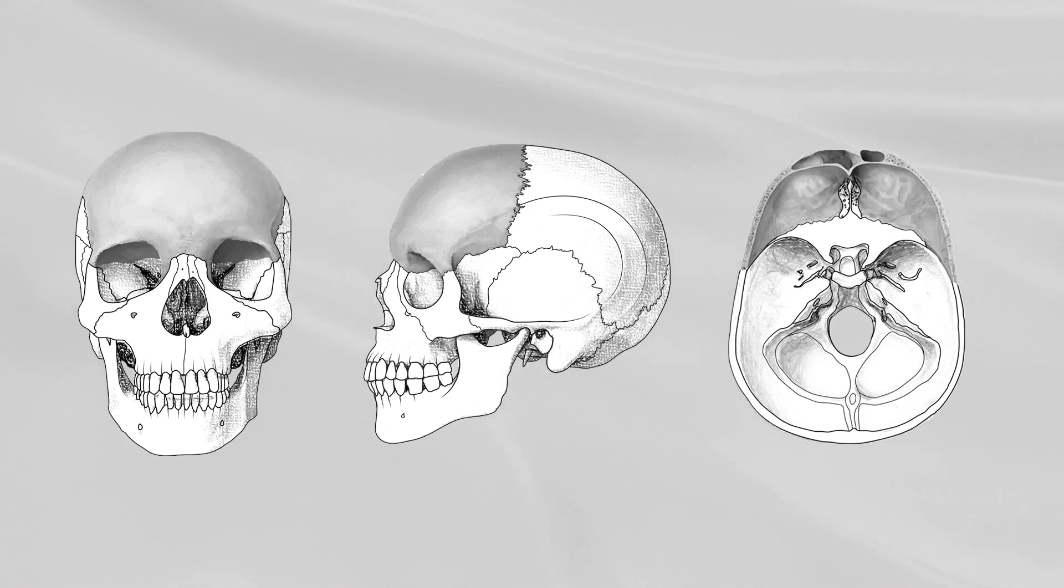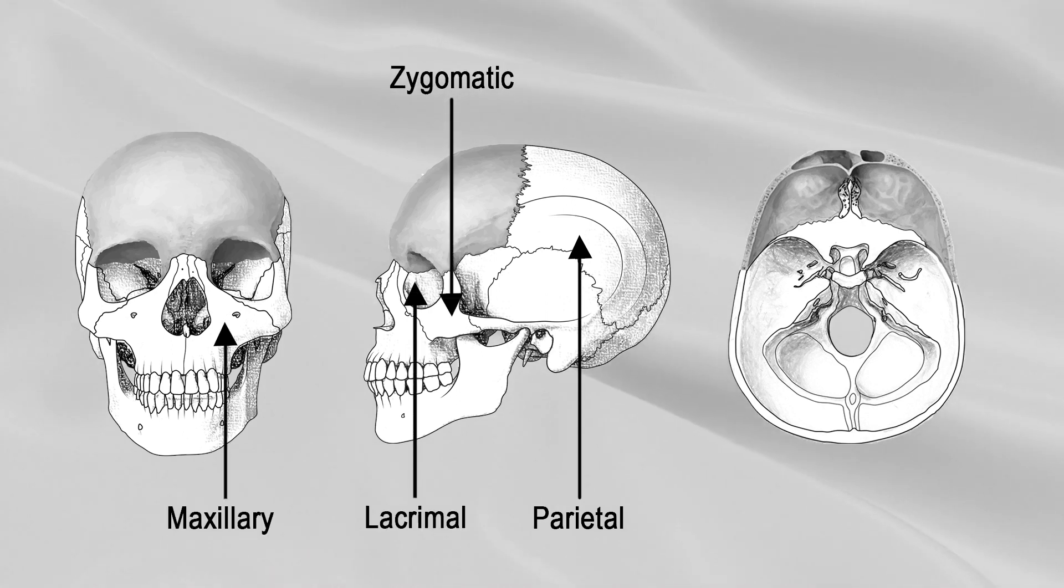The frontal bone articulates with twelve bones, of which two are unpaired bones and five are paired bones. The unpaired bones include sphenoid and ethmoid, while the paired bones include parietal, zygomatic, lacrimal, maxillary, and nasal.